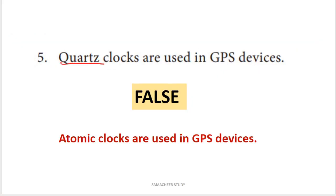Next statement: quartz clocks are used in GPS devices. There are different types of clocks. Quartz clocks are not used in GPS — atomic clocks are used in GPS devices. So this is a false statement. To correct it, replace 'quartz' with 'atomic'.